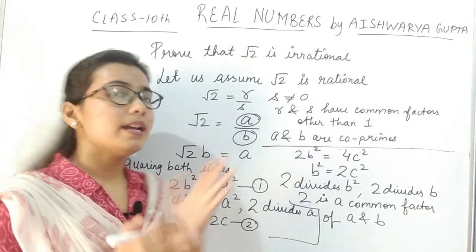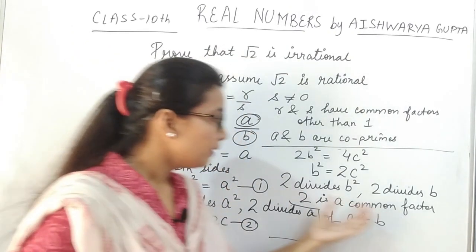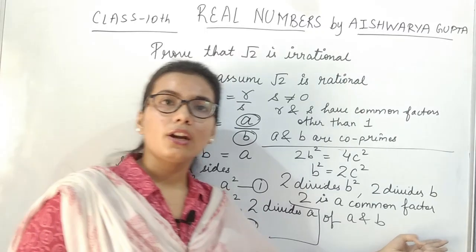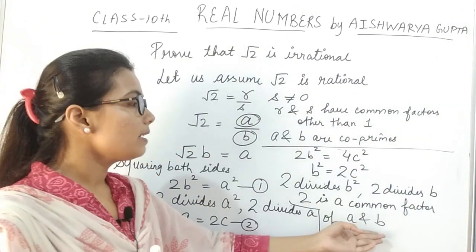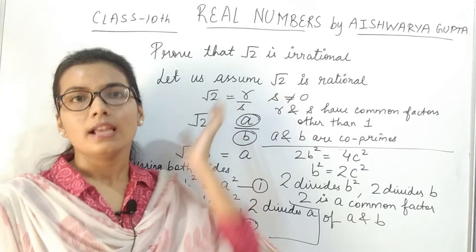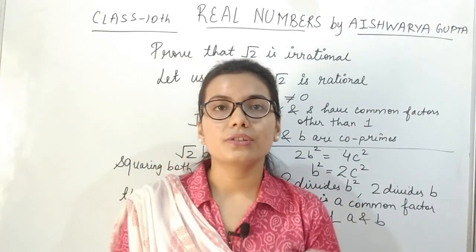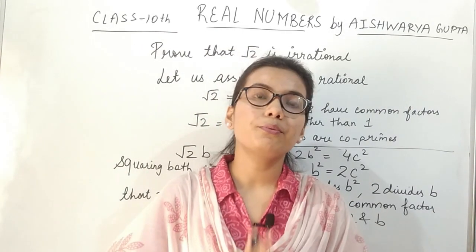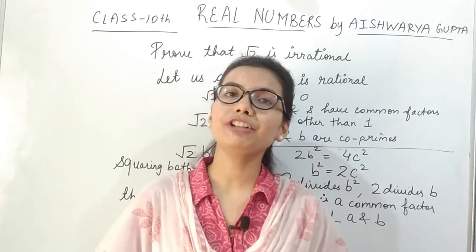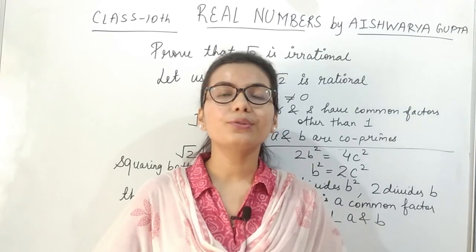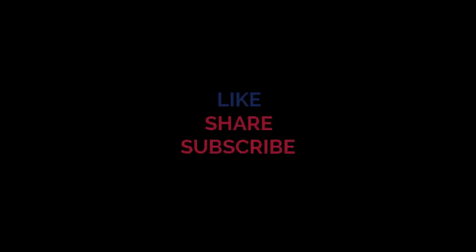So we get that 2 divides A and 2 divides B, which means 2 is a common factor of both A and B. This contradicts our assumption that root 2 is rational. Therefore, root 2 is irrational. This is how we can prove that a particular number is irrational. If you like the video, please like, share, and subscribe. If you have a query, ask in the comment box. Thank you everyone.